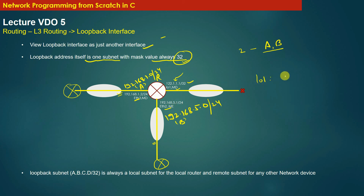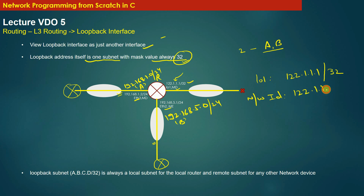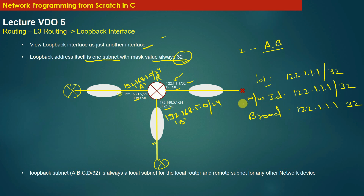Applying IP address mathematics to loopback interface LO1 configured with 122.1.1.1/32: the network ID is 122.1.1.1/32, and the broadcast address is also 122.1.1.1/32. For loopback interfaces, the network ID, broadcast address, and the configured IP address are all the same. How many local subnets does router R now have?